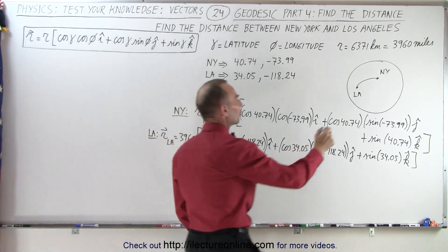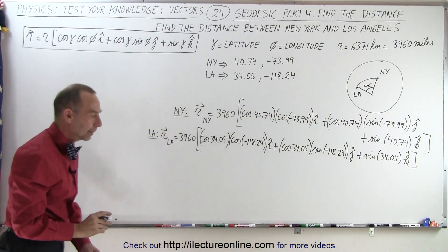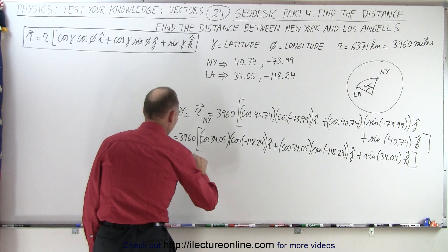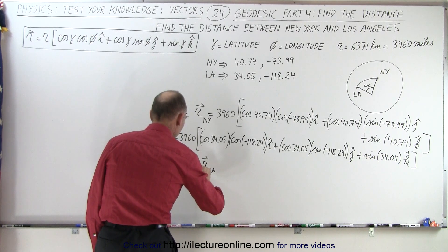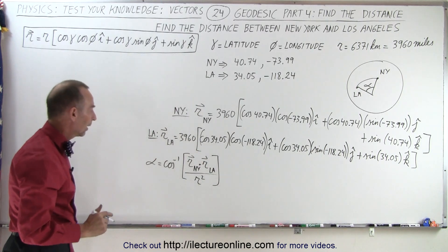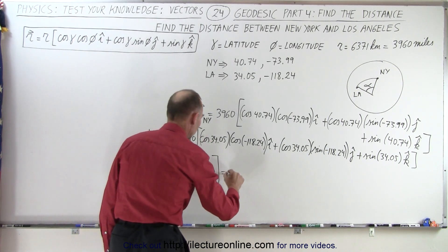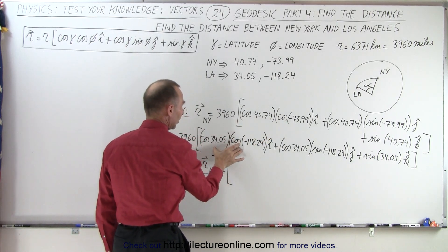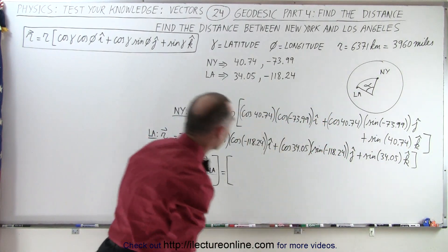Now we want to know the angle between the two vectors to the center of the Earth. We'll call that angle alpha. Alpha is going to be the inverse cosine of the dot product of the two vectors — R_LA dot R_NY — divided by the magnitude of the first vector times the magnitude of the second vector, which is R squared. That takes care of the 3,960 times 3,960 divided by the radius squared, so all we have left is the dot product of the unit vector components. We simply multiply the x-coordinates together, the y-coordinates together, and the z-coordinates together.